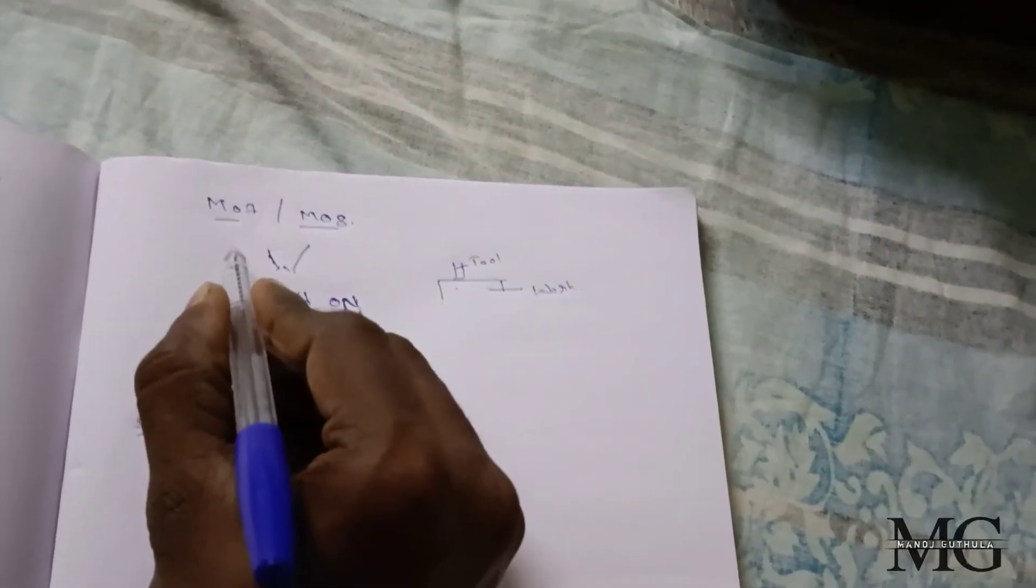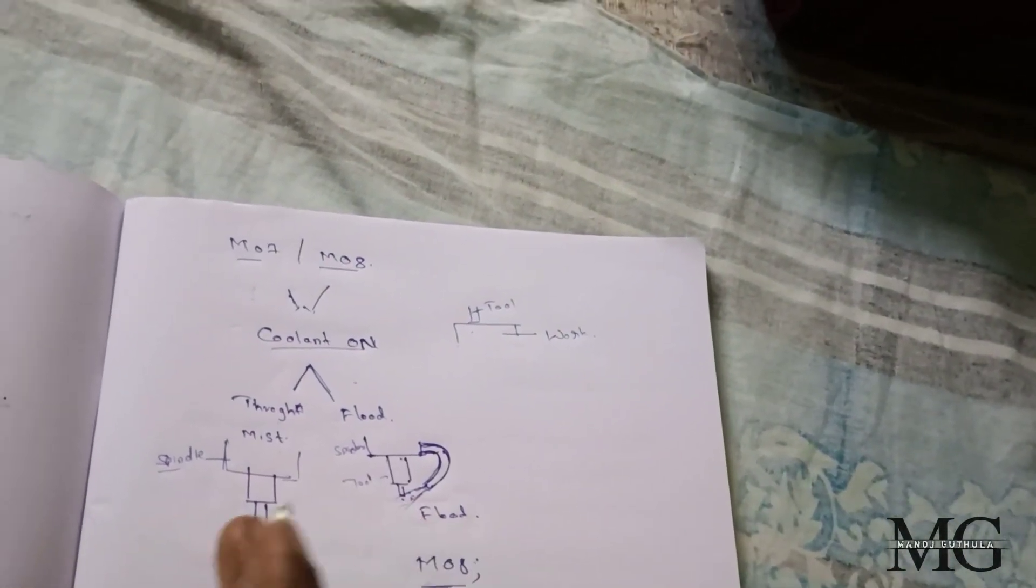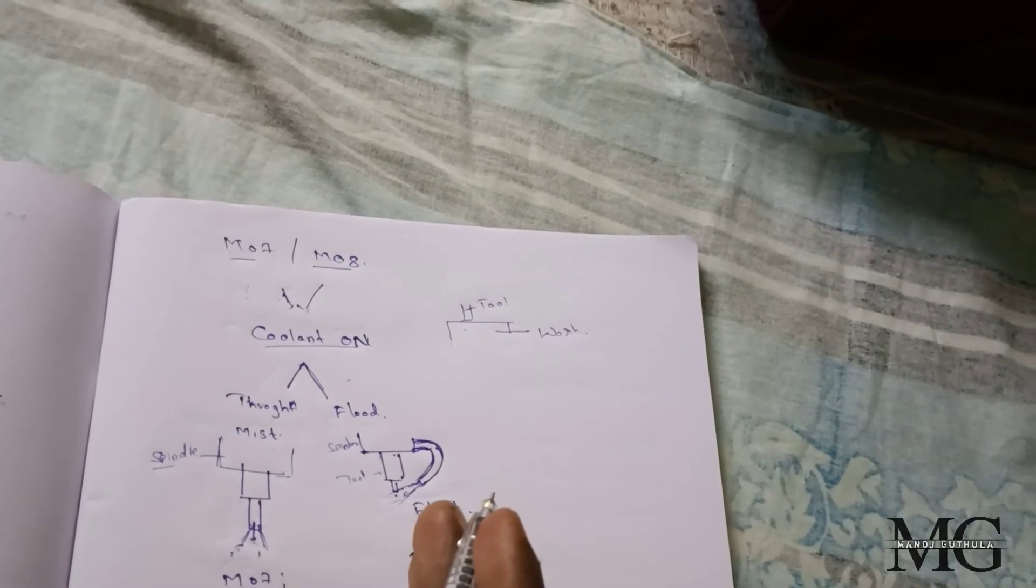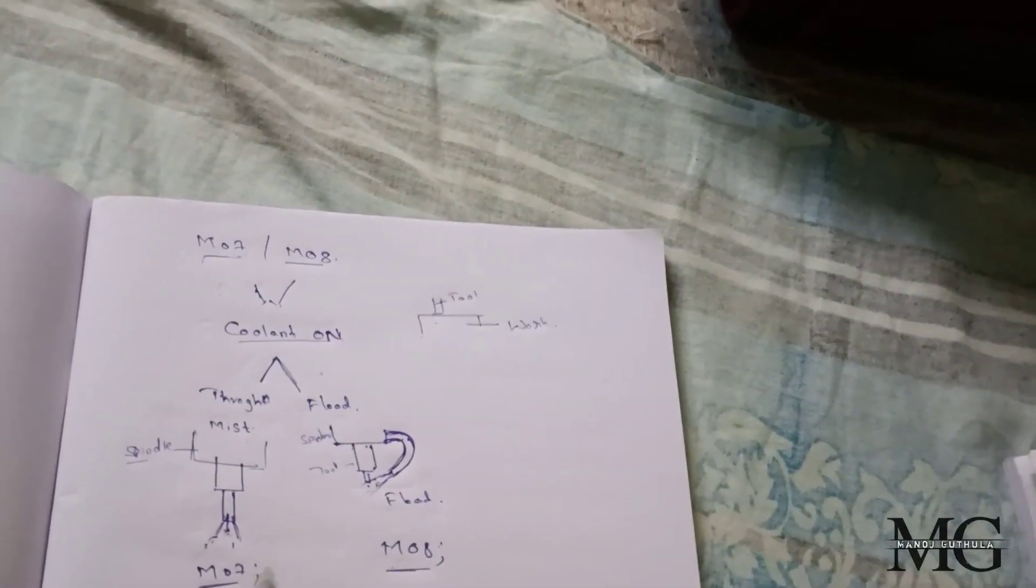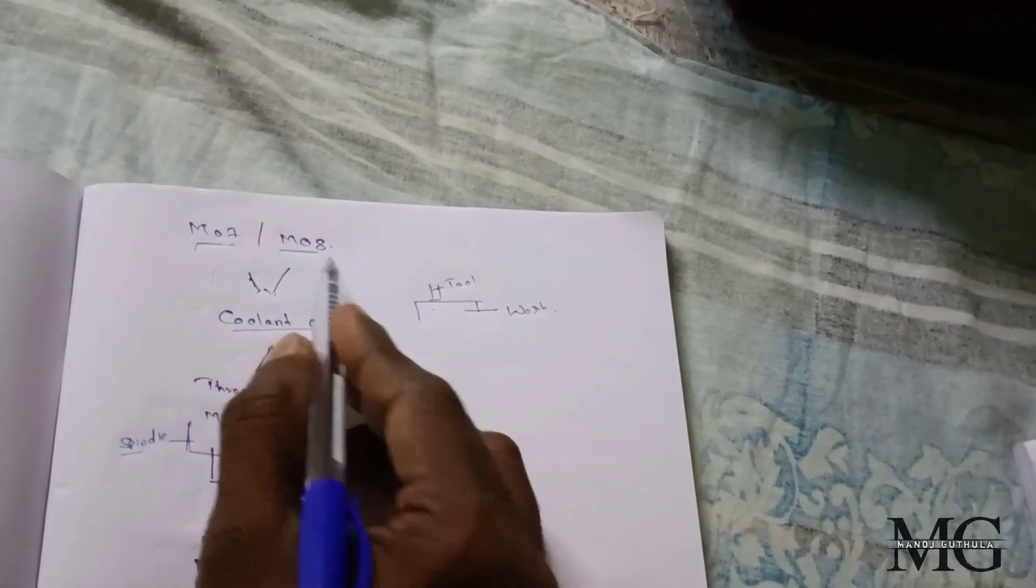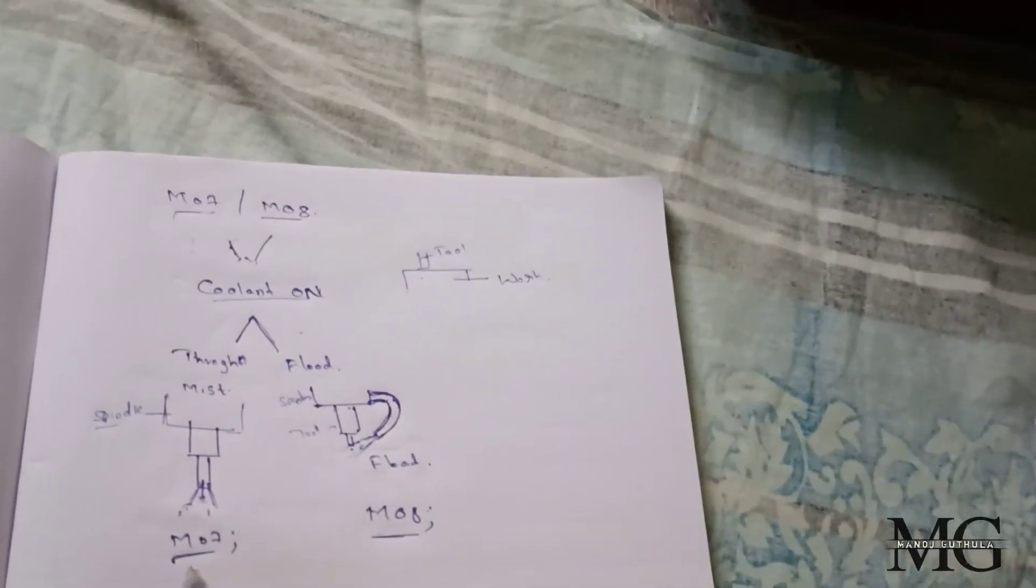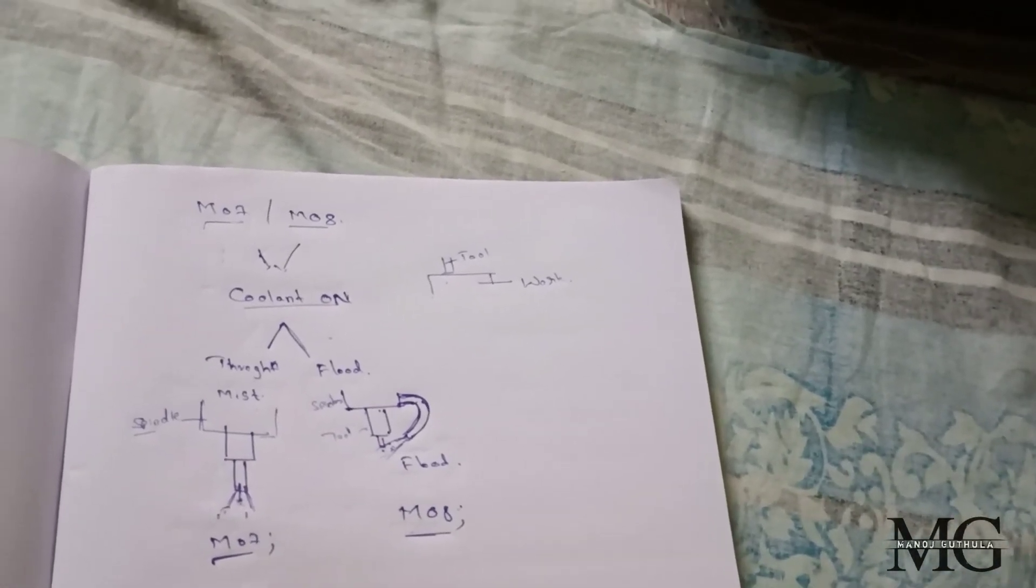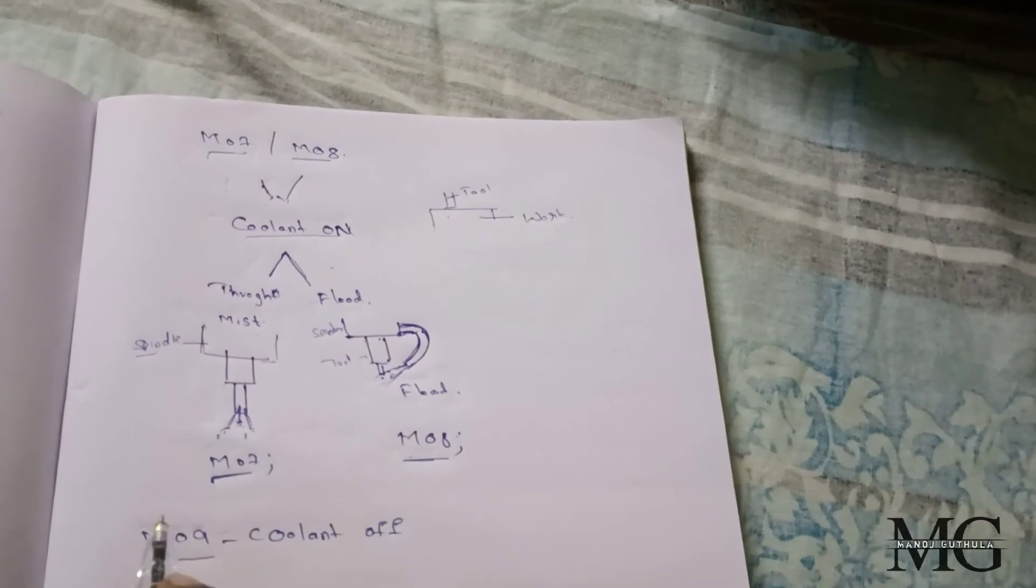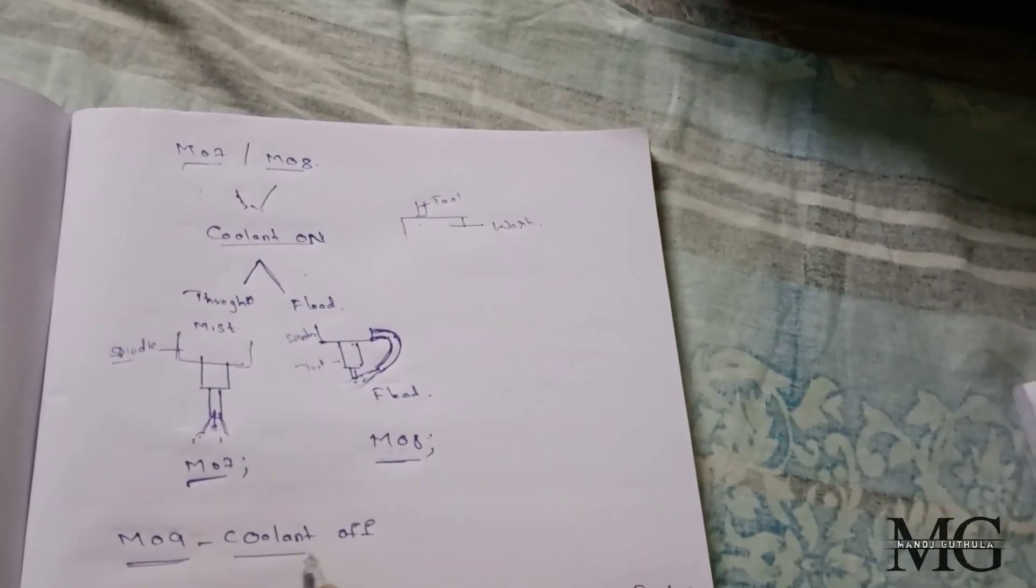To differentiate this through and flood coolants, we use M07 for through coolant, and M08 for flood coolant. For coolant on, we are using both codes. To off the coolant, we use M09. M09, it means simply coolant off.